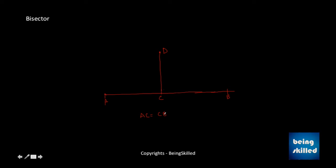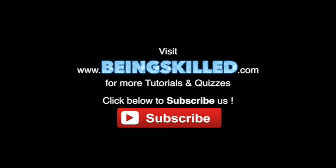So whenever you see any intersection of two lines, and that particular line bisects or divides the base into two equal parts, then it is a bisector. Thank you for watching the tutorial.